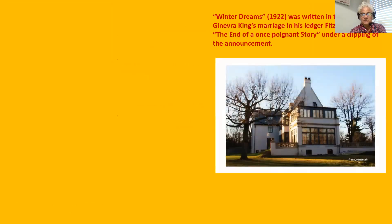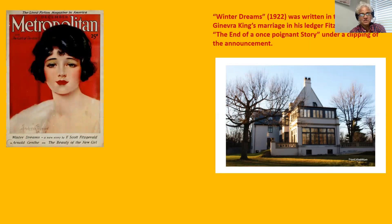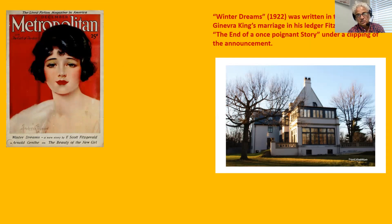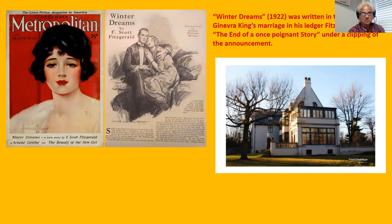In his ledger, Fitzgerald wrote 'It's the end of a poignant story' under a clipping of the announcement of Ginevra's marriage. This is the cover of Metropolitan Magazine that features 'Winter Dreams.' Interestingly, if you go back to that picture of Ginevra King on Town and Country, the magazine cover illustrations kind of look alike — but the illustrator did not have Ginevra King in mind; it's just a fluke. In the story, she's portrayed more as a light-haired or blonde character.